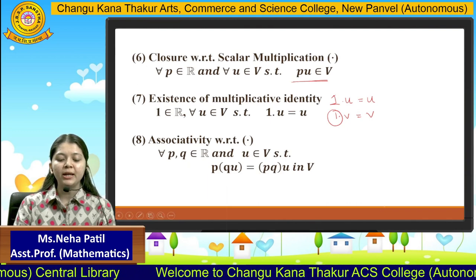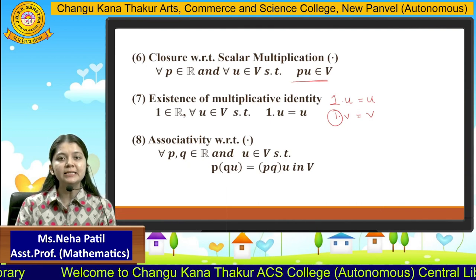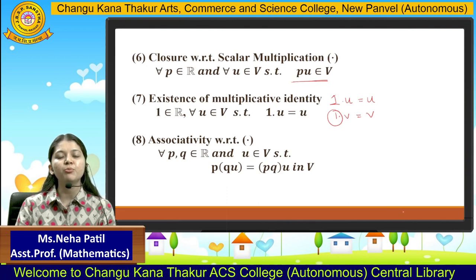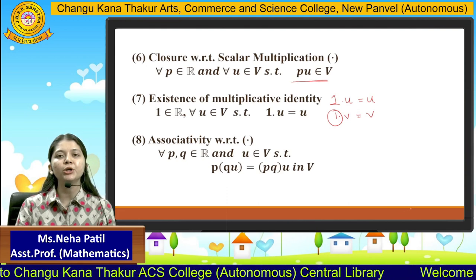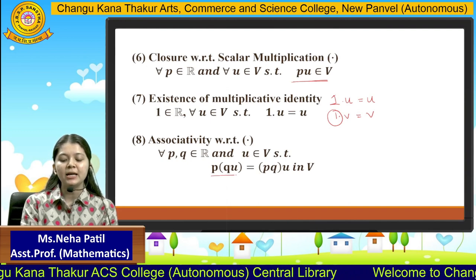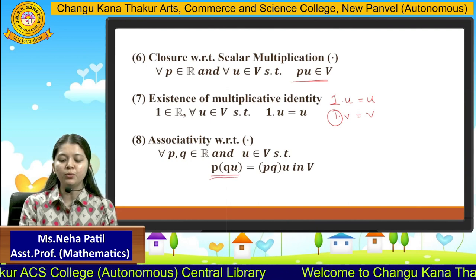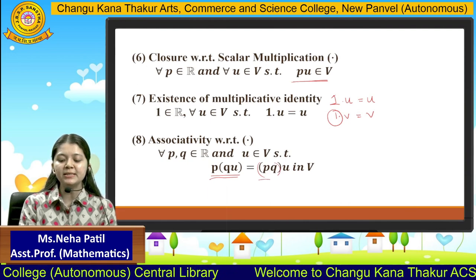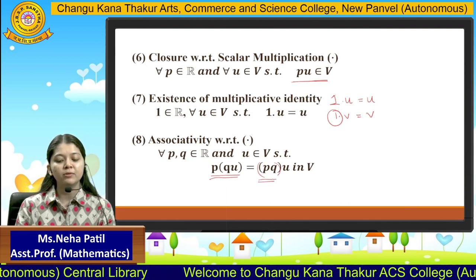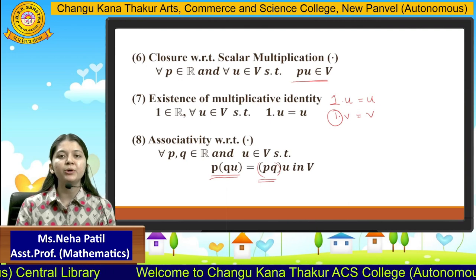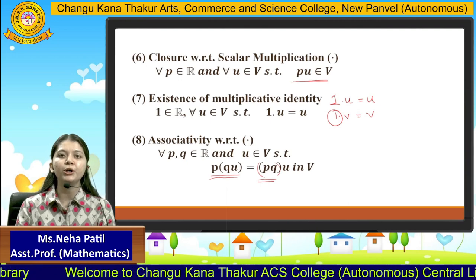The eighth property is associativity with respect to scalar multiplication. This says that if we have two scalars belonging to the real numbers and any one element belonging to the set, then (pq)u equals p(qu). Even if we rearrange the brackets, we get the same answer, and the result always belongs to the set.